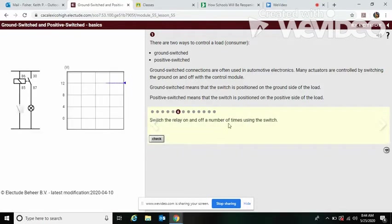Switch the relay on and off a number of times. Okay, so watch here. When I click this, this switch will close and the light turns on. Here we see our power go through. So it's making, it's being used by the lamp. Off, on, off.